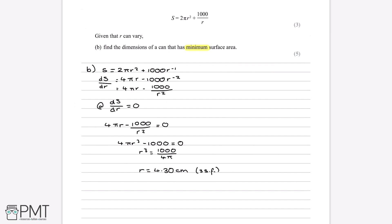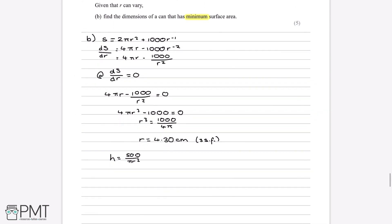The question asks for the dimensions, meaning both radius and height. We have the radius, and from Part A we found h = 500/(πr²). Substituting r = 4.30 centimetres into this equation gives h = 500/(π × 4.30²), so h = 8.60 centimetres to three significant figures.